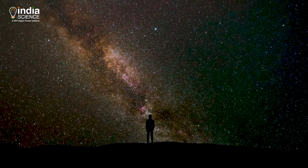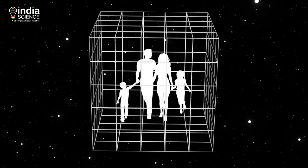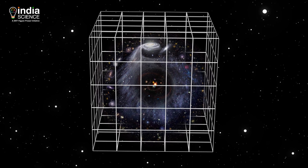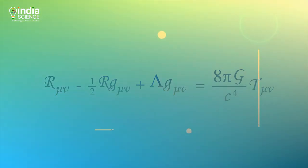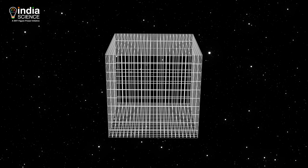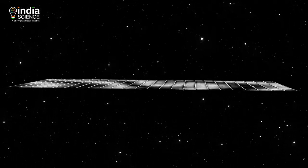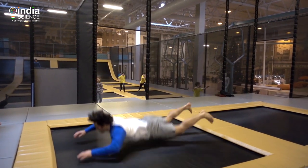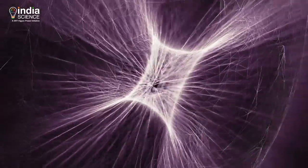We always feel that space is all about emptiness, where everything exists — us, the earth, planets and galaxies. But according to the general theory of relativity, space is not just emptiness; it is a physical thing. It is like a carpet on which everything exists. It can bend because of matter, like a trampoline bends when you jump on it. It expands as well, like a rubber sheet expands.